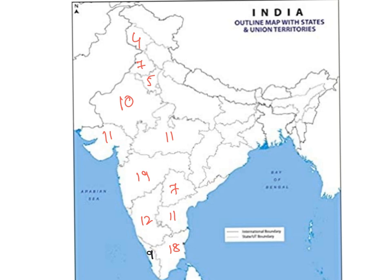The other important one is Uttar Pradesh. Remember that the highest seats allocated, 31, go to Uttar Pradesh. Remember the number 3: Uttarakhand, which is adjacent to Uttar Pradesh, also has 3 seats. Adjacent to that is Himachal Pradesh, which also has 3 seats. Union Territory Delhi also has 3 seats.